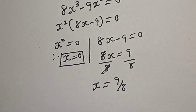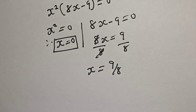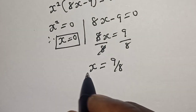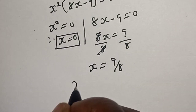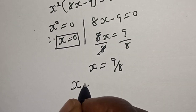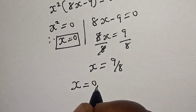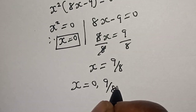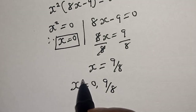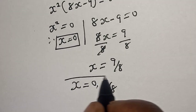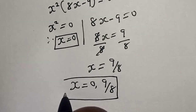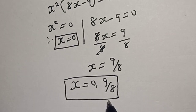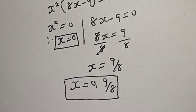Therefore, our final answers are x equals 0 and x equals 9 over 8. If you enjoyed the class, please don't forget to like, share, comment, and subscribe. Thank you.